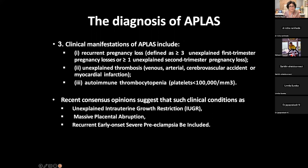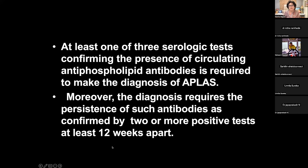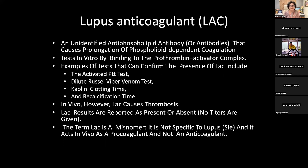At least one of three serological tests confirming the presence of circulating antiphospholipid antibodies is required to make the diagnosis. We cannot confirm antiphospholipid syndrome unless all three serological tests are addressed. Moreover, the diagnosis requires persistence of such antibodies as confirmed by two or more positive tests at least 12 weeks apart — this is very important.